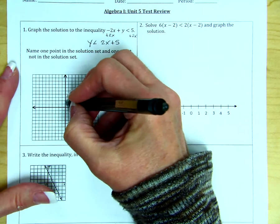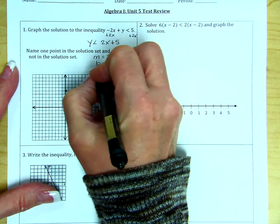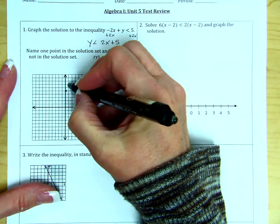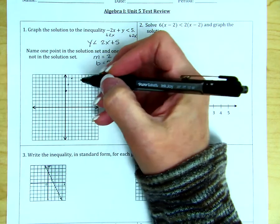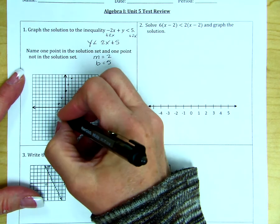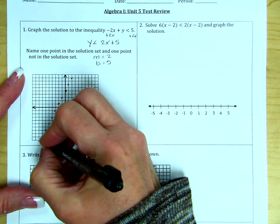So I graph the y-intercept of 5. And then I have a slope of positive 2. So if I go up 1, I go right 2. So if I go down, I go left. Plot as many points as possible within the space provided.